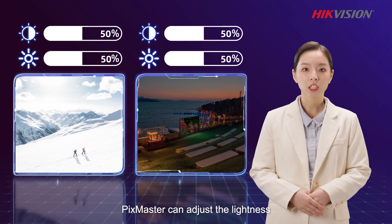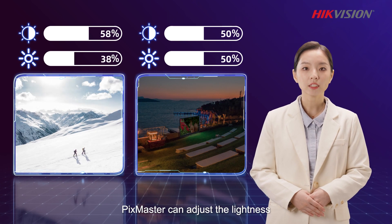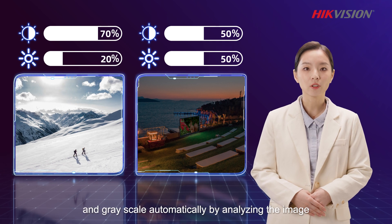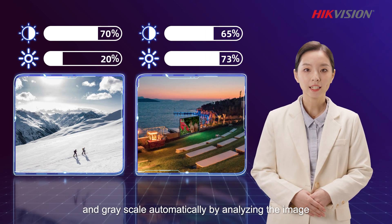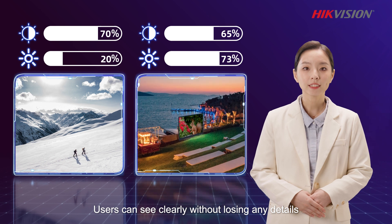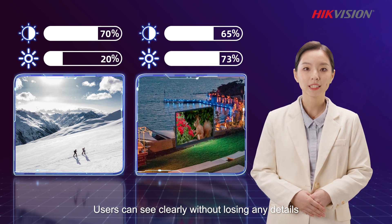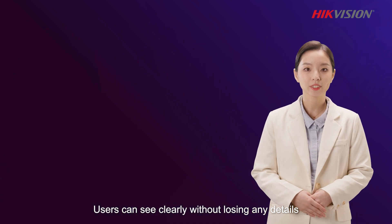PixMaster can adjust the lightness and grayscale automatically by analyzing the image, so users can see clearly without losing any details.